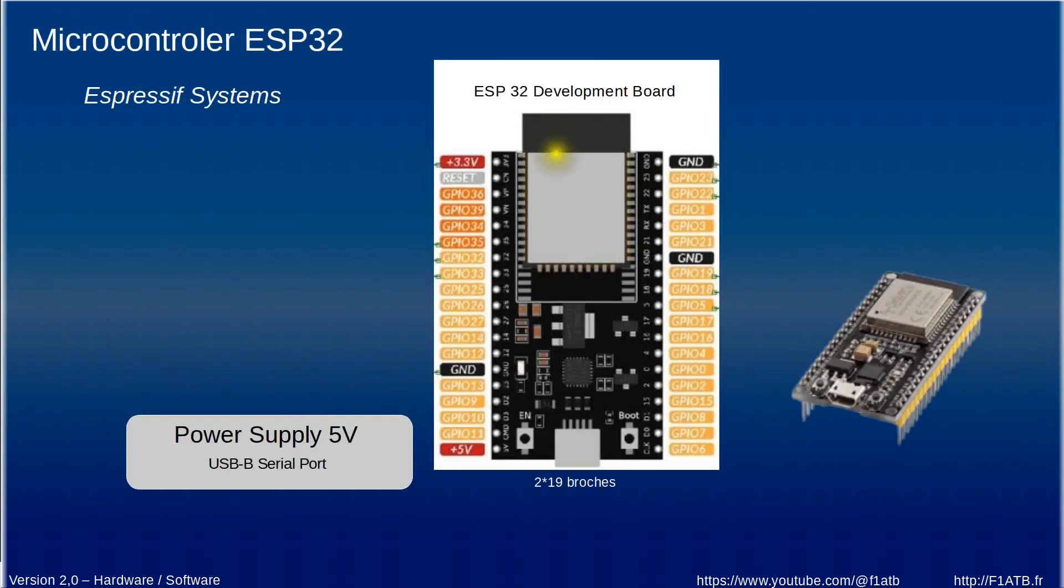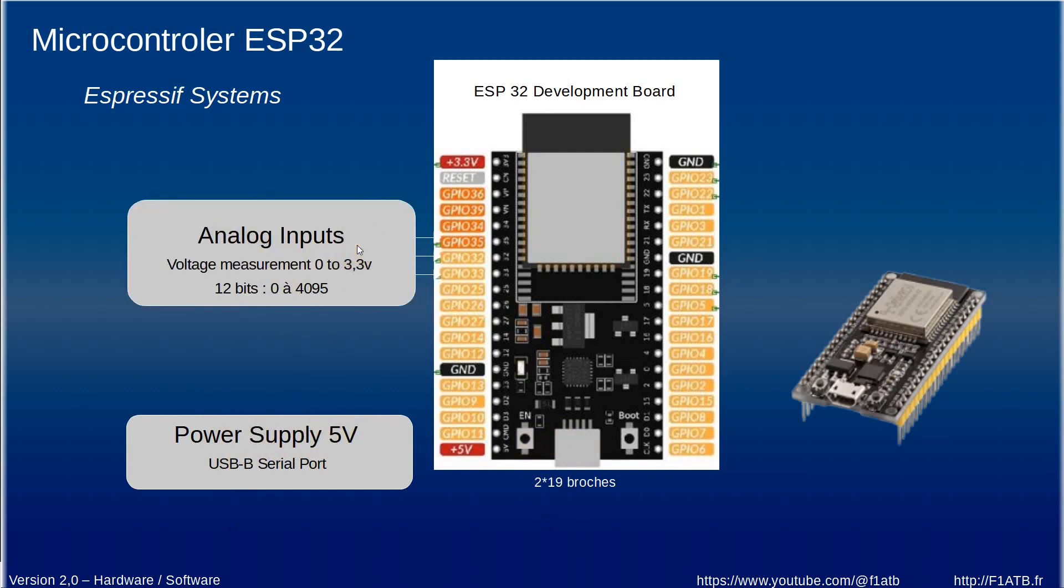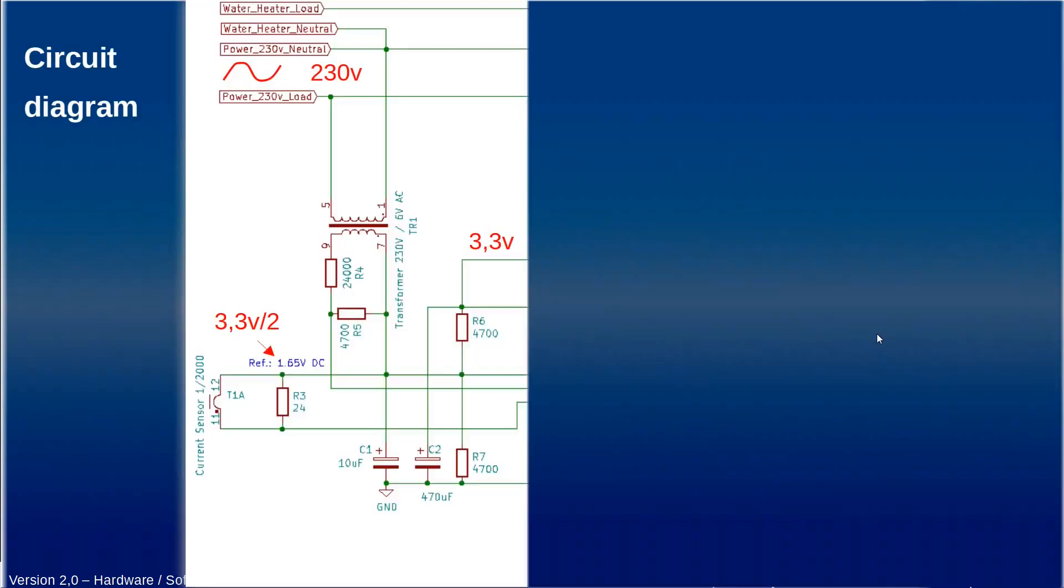so the microcontroller as already mentioned is a system called ESP32 we use what we call development board. It's a system with 2 times 19 pins the power supply needed is a 5 volt power supply. This system is able to measure analog signals between 0 and 3.3 volts we will use three pins for that the conversion is done on 12 bits which is quite accurate and the system can manage also digital input or output